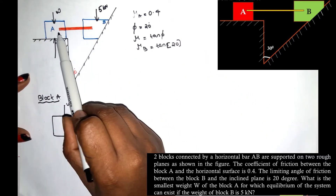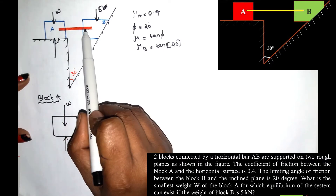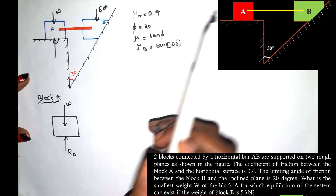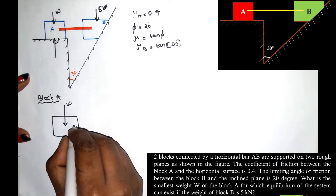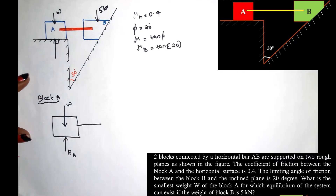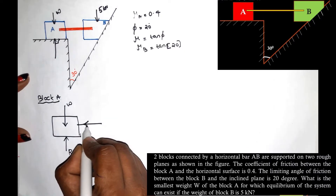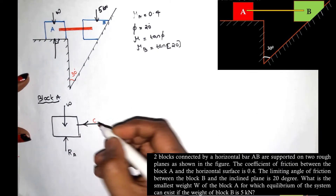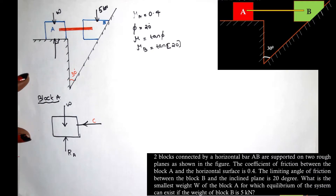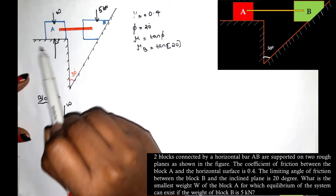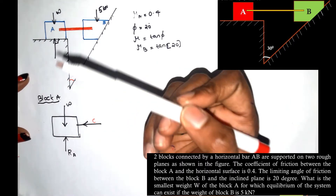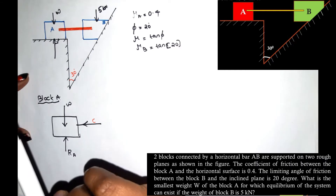Block A is connected via a rigid bar, so there is a compressive force C acting on it. At the contact surface there is also a friction force. The direction of the friction force is opposite to the direction of potential movement of block A.